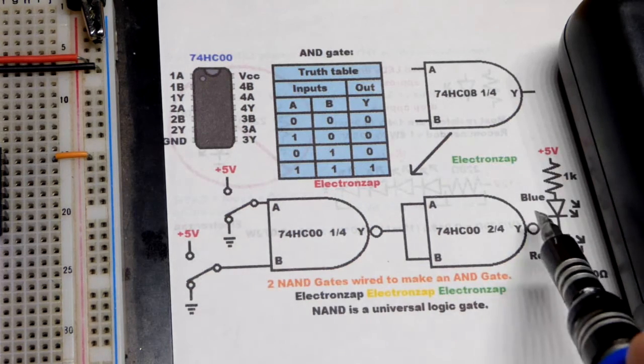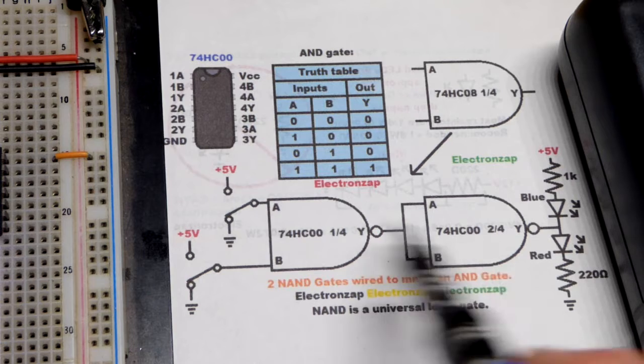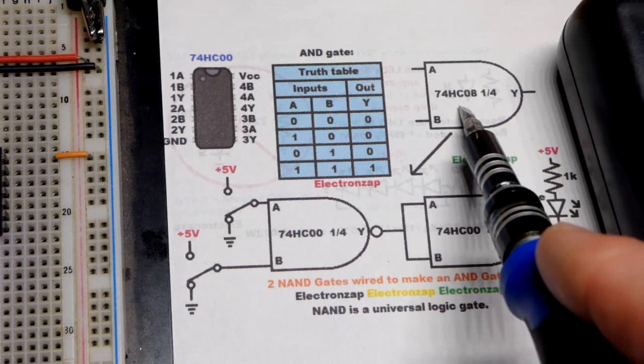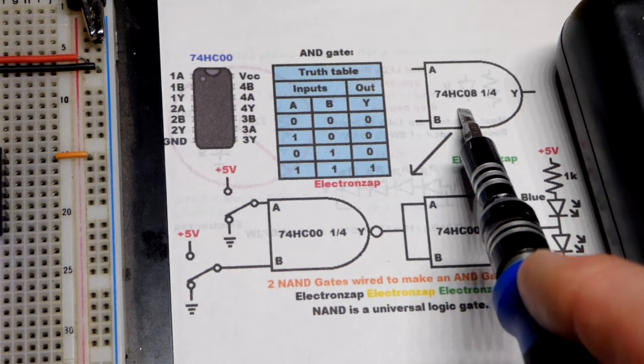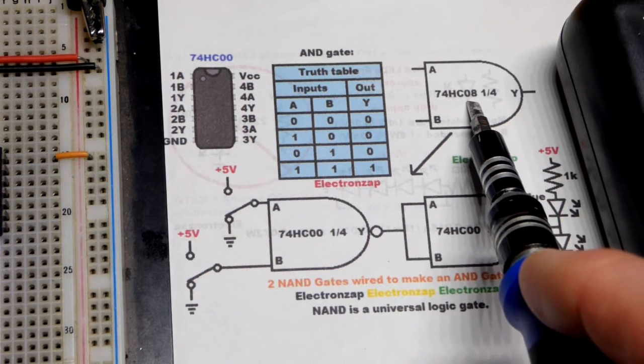The 74HC08 is AND gates, so we could just use one of those. If we just wanted the inputs and the output there, combine this into one component. But for whatever reason, we're not using that.